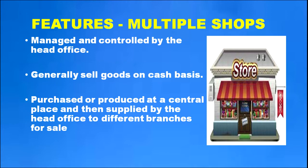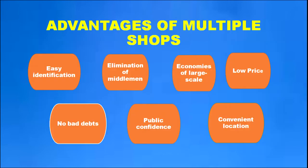Purchasing or production is done at a central place and then supplied to different branches by the head office. Advantages of multiple shops include easy identification due to uniform decoration, elimination of middlemen, economies of large scale operation, low prices, no bad debts from cash-only sales, public confidence due to high quality products, and locations convenient to customers.